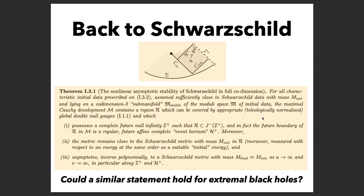Here's a more precise statement of the non-linear asymptotic stability of Schwarzschild in full co-dimension. There is a codimension-three sub-manifold — let me not say why it's codimension-three and not codimension-one, this just has to do with the fact that Schwarzschild has extra symmetry with respect to Kerr — of the moduli space of initial data. If you're on that sub-manifold, then the development has a complete future null infinity, a regular event horizon, and the solution asymptotes inverse-polynomially to a nearby Schwarzschild metric.